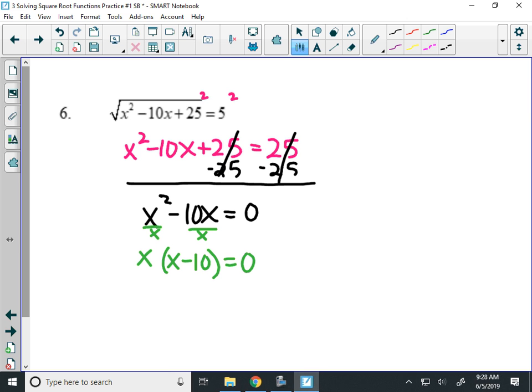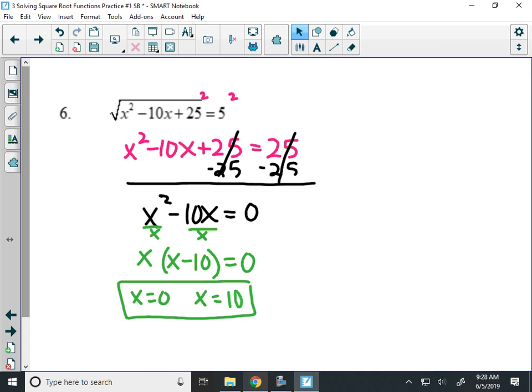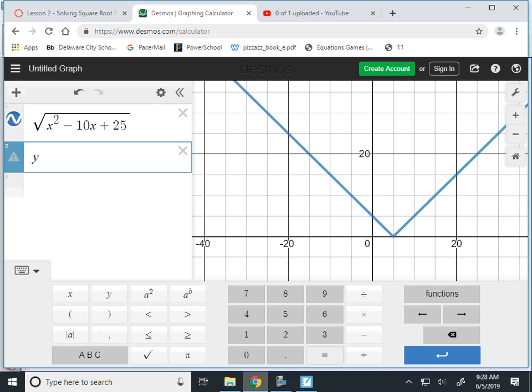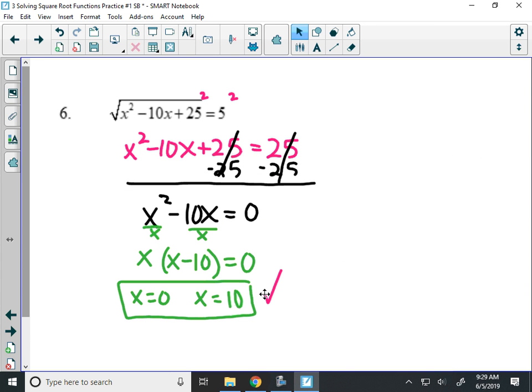Now my solutions here, the first x gives me 0. x equals 0 is the solution, and the next one gives me 10. So I want to check, where is the solution here? So I'm going to graph square root of x squared minus 10x plus 25. And then I'm going to graph y equals 5. Looks like it crosses twice at 0 and 10, which were both of my solutions, so I know I'm good. But they're both solutions there. No extraneous on them.